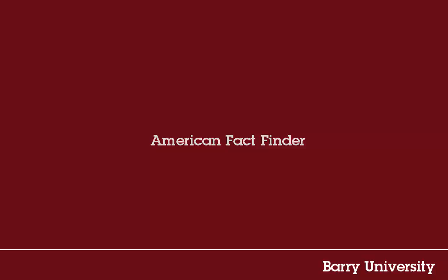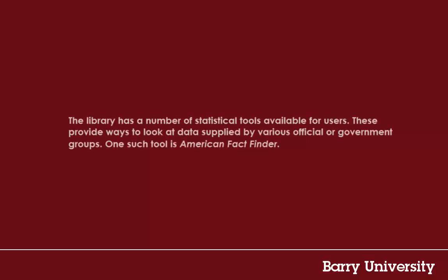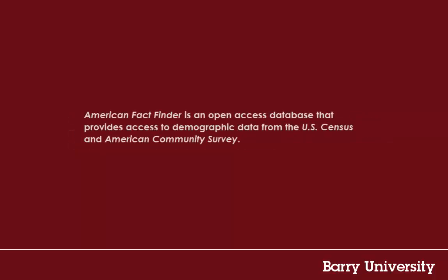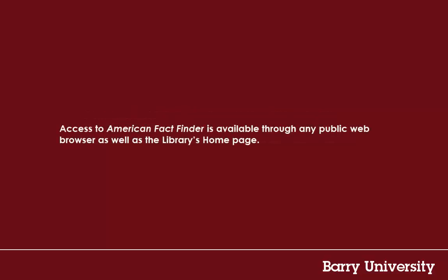The library has a number of statistical tools available for users. These provide ways to look at data supplied by various official or government groups. One such tool is American FactFinder. American FactFinder is an open access database that provides access to demographic data from the U.S. Census and American Community Survey. Access to American FactFinder is available through any public web browser as well as the library's homepage.